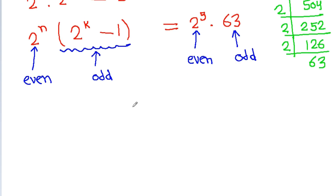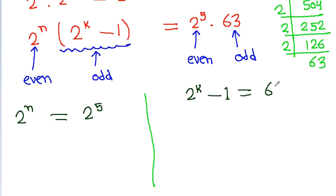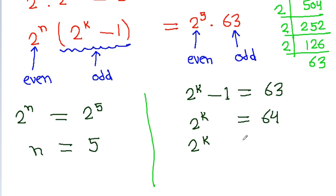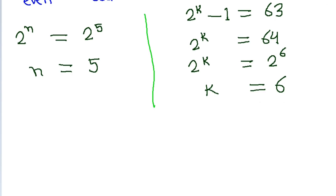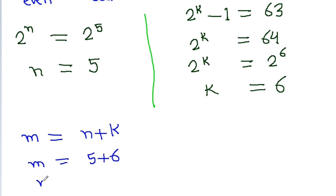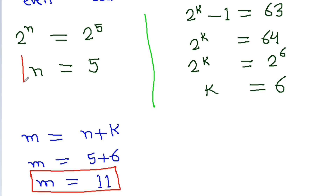So we get 2 to the power n equals 2 to the power 5, and 2 to the power k minus 1 equals 63. From here we get n equals 5. This gives us 2 to the power k equals 64, so k equals 6. We can now calculate m as n plus k, giving m equals 5 plus 6, so m equals 11. Therefore the value of m is 11 and the value of n is 5.